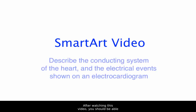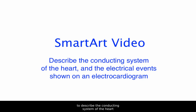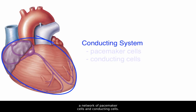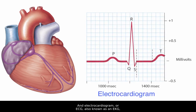Welcome to another anatomy and physiology smart art video, where we guide you through an important piece of art. After watching this video, you should be able to describe the conducting system of the heart and the electrical events shown on an electrocardiogram. Let's begin by looking at this image showing the heart and its conducting system, a network of pacemaker cells and conducting cells. An electrocardiogram, or ECG, also known as an EKG, measures the electrical activity of the conducting system.